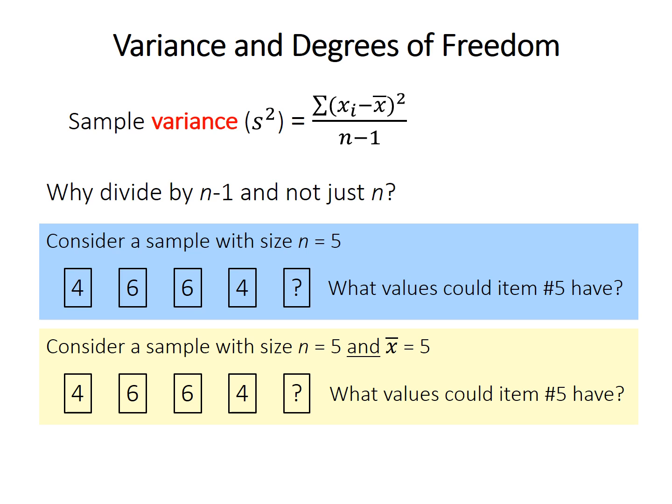But now imagine the same data set, 4, 6, 6, and 4, but now we know that the mean of the sample, x bar, is 5. So if the first four values are 4, 6, 6, and 4, the fifth value must be 5. If the mean is 5, the fifth value can only be 5. So in that case, if we know n minus 1 values and the mean, the final value has no freedom to vary. So we have four degrees of freedom in this example. We're essentially using one of them to calculate our sample mean in the equation for variance.